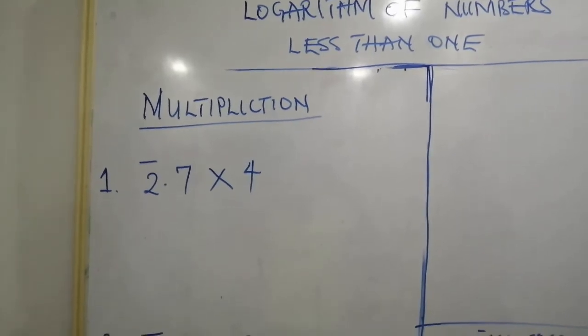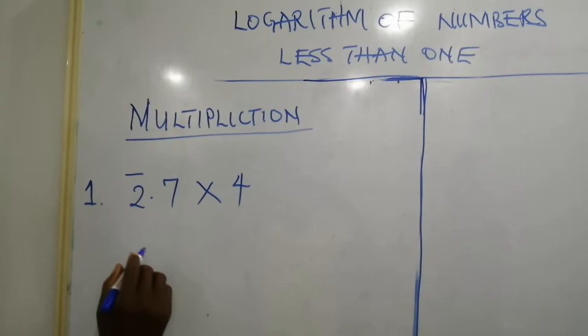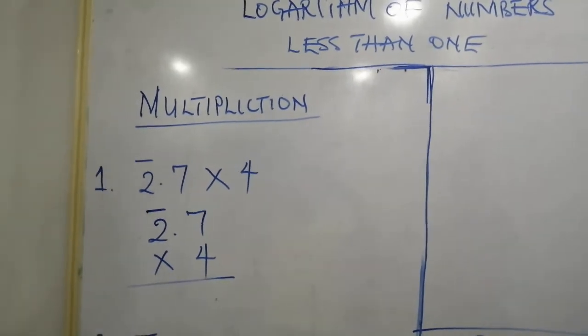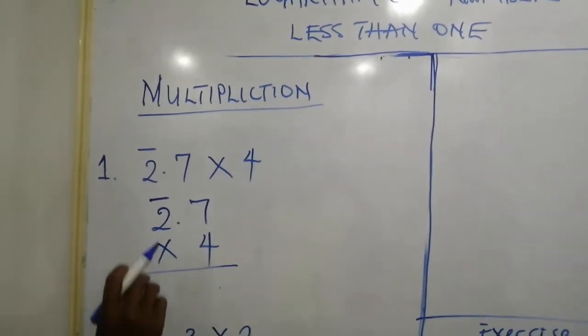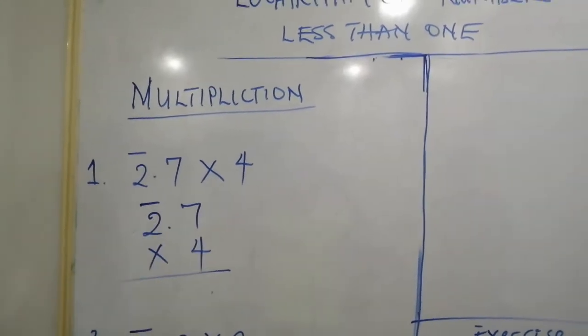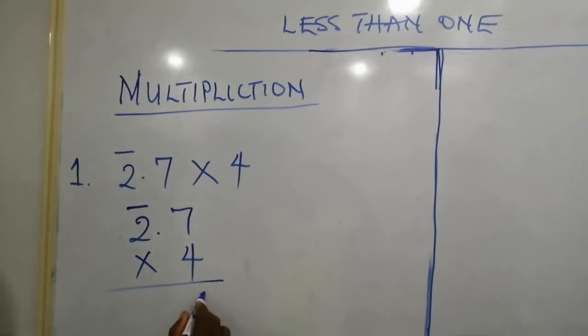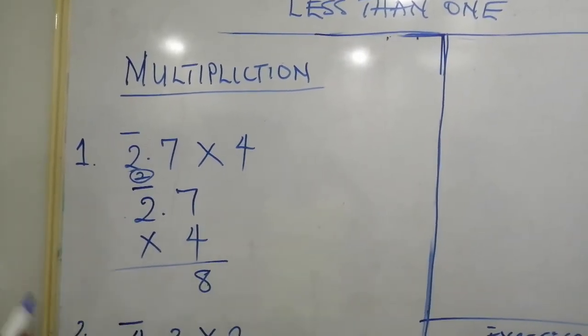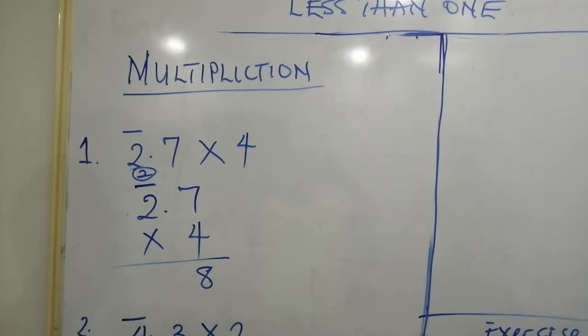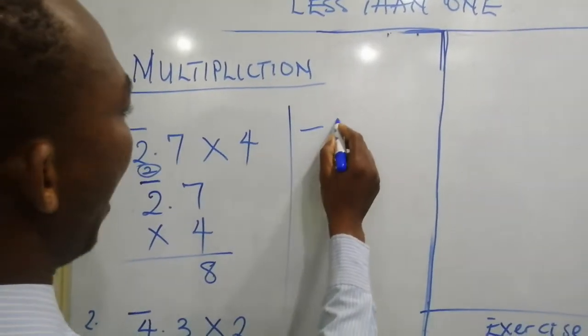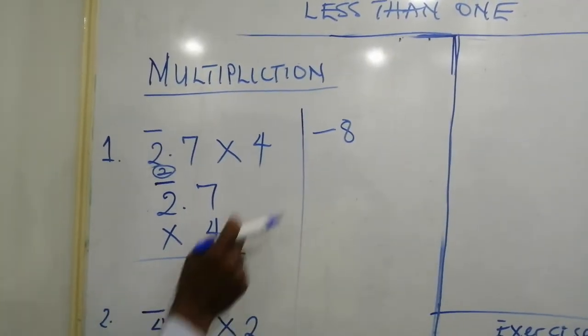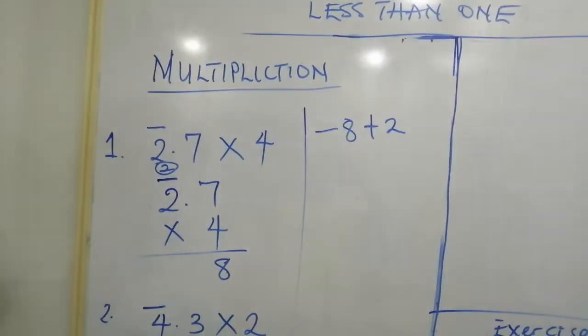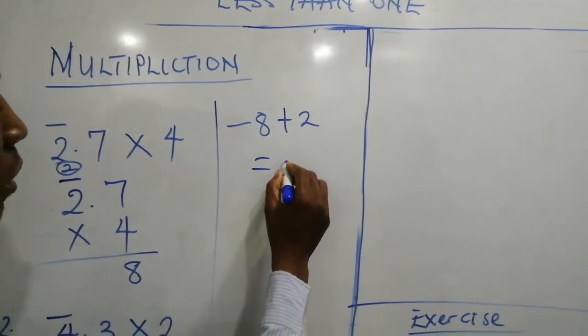Bar 2.7 × 4. We are using 4 to multiply by 2.7. 4 × 7 will give us 28. You write 8 and carry the 2 here. 4 × bar 2 will give us bar 8, which simply means minus 8. And you have 2 there. Minus 8 plus 2 will give us minus 6. And under Logarithm of Numbers, you cannot write minus 6. That would be bar 6.8.